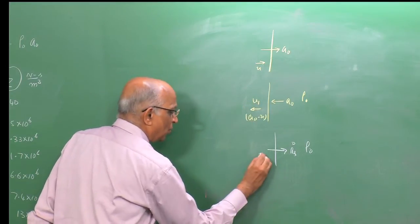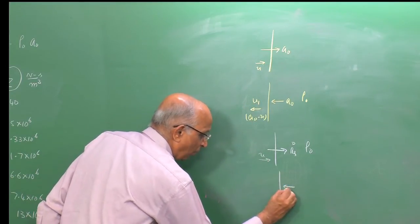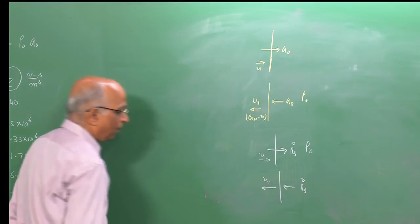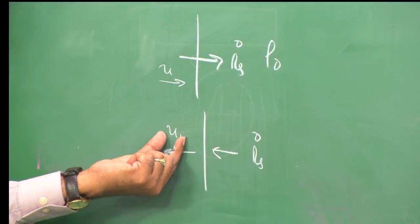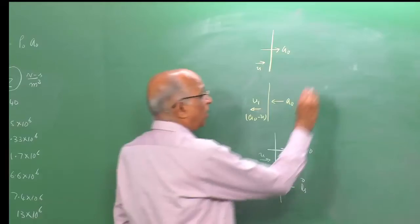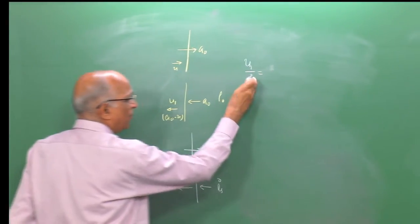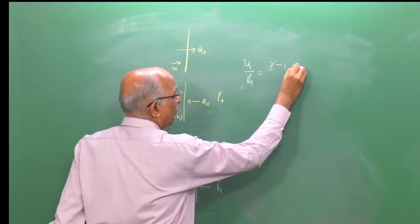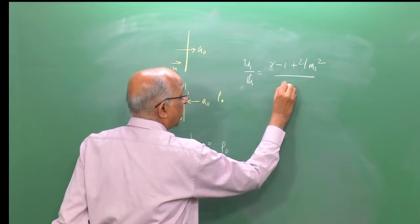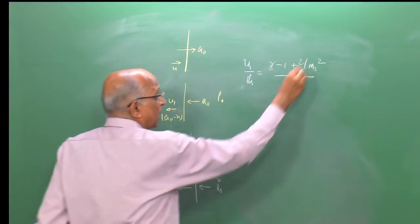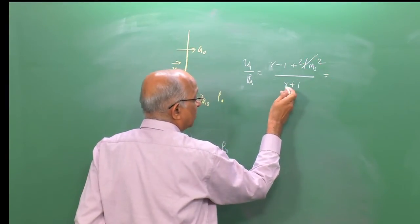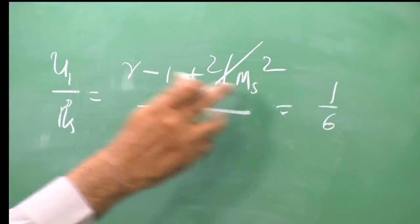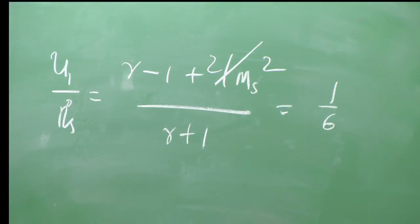In the frame of the stationary shock, particles follow with velocity u. We derived u₁/Ṙ_s for a strong shock as (γ − 1 + 2/M²) / (γ + 1). For large Mach number M, this reduces to (γ − 1)/(γ + 1) — for air this is around 1/6. So u/Ṙ_s has a definite finite value for strong shocks.